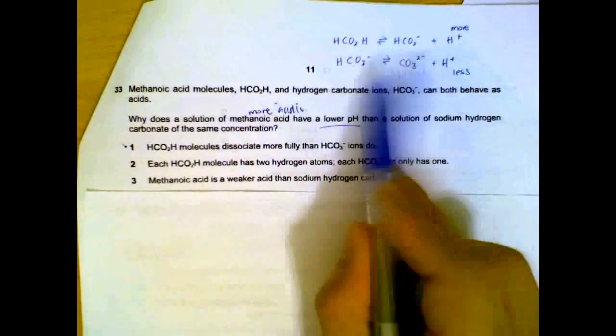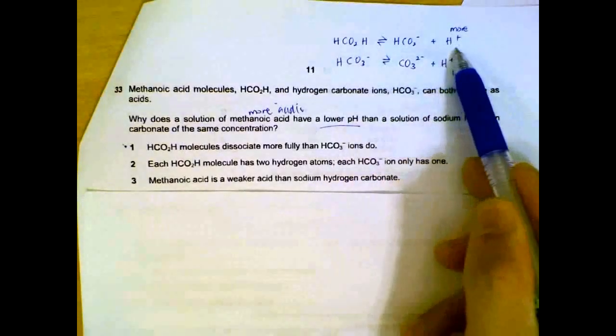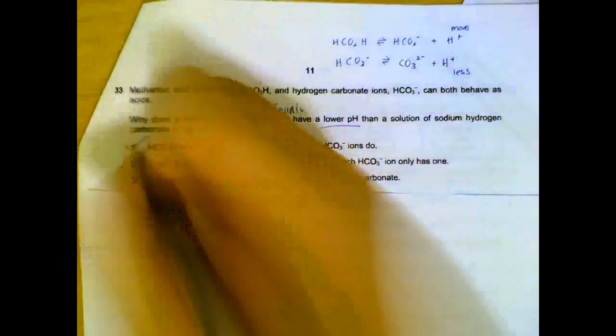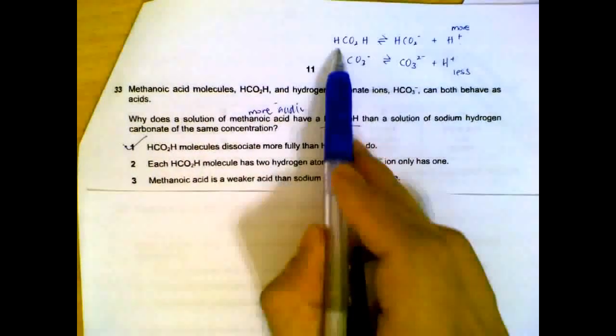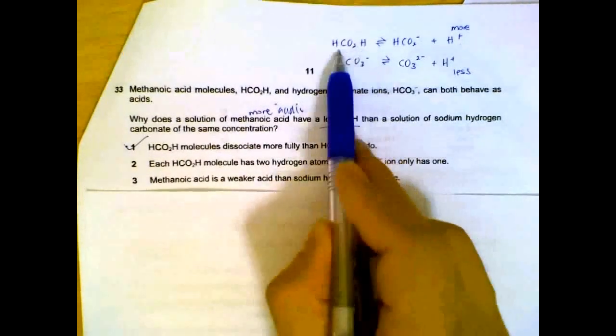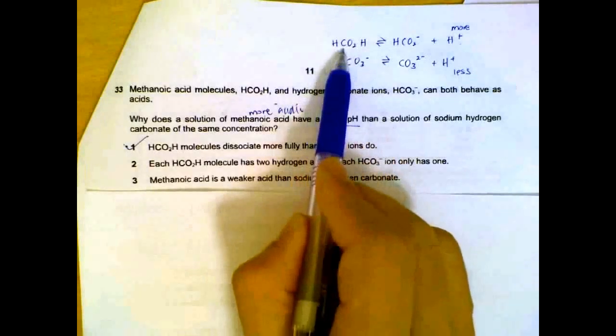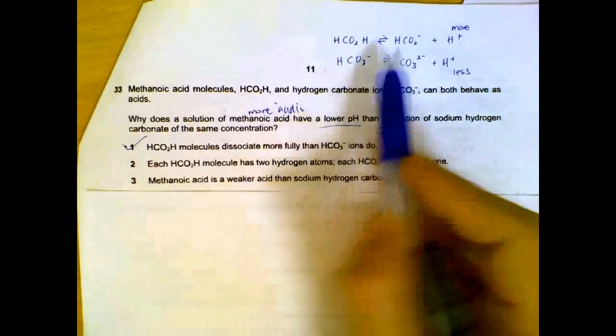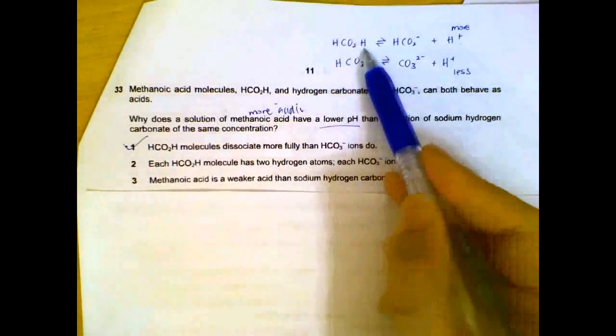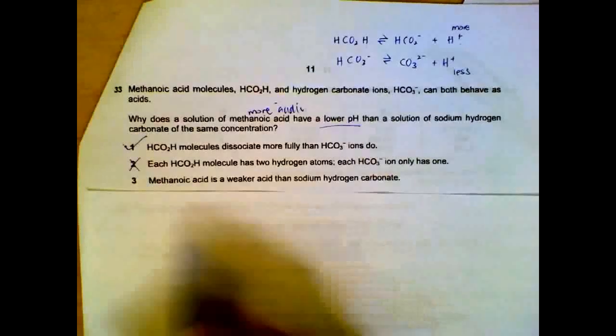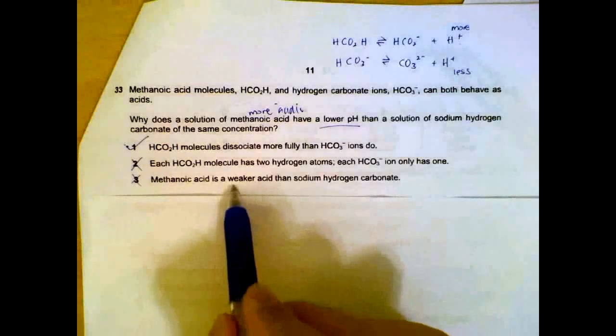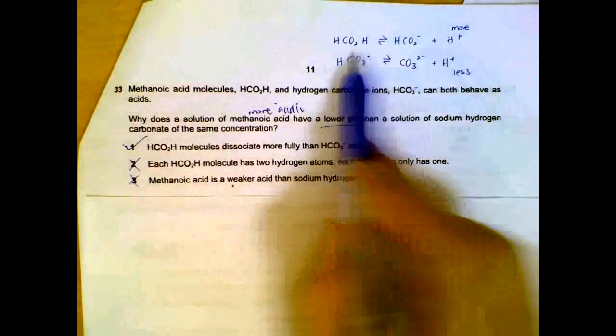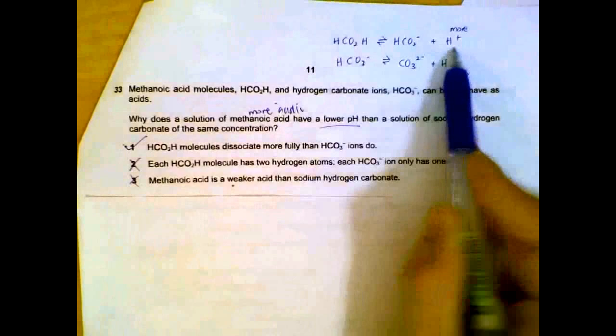Each methanoic acid has two hydrogen atoms. It does have two hydrogen atoms, but the one that's attached to the carbon will not be released as H+. So that's not relevant to the question. Only the one that's attached to the OH will be released. So statement 2 is wrong. That makes statement 3 also wrong. It's not a weaker acid. If anything, it's a stronger acid. For the same concentration, it releases more H+.